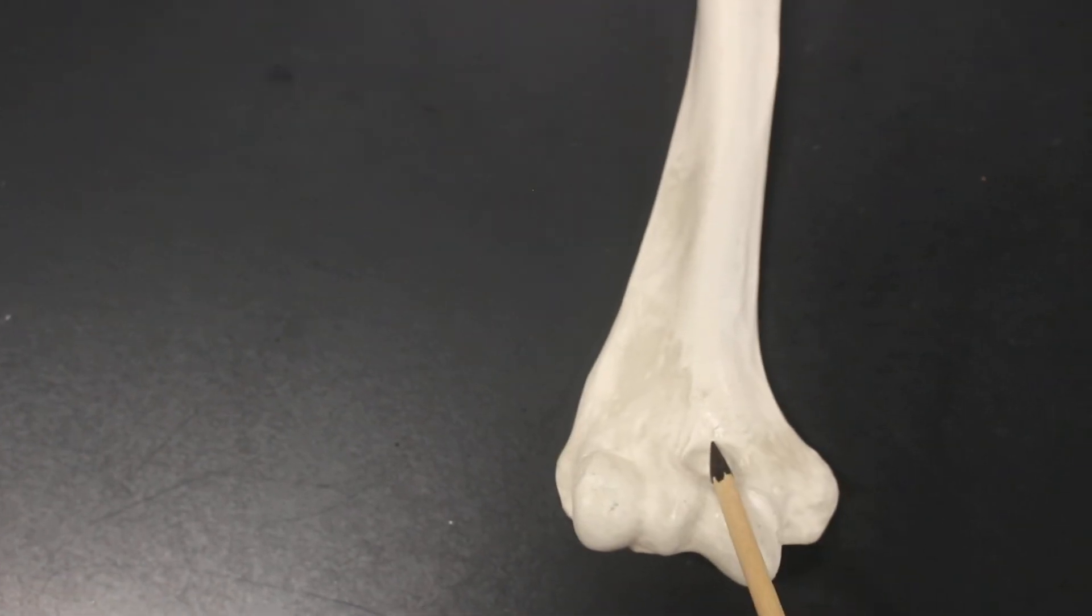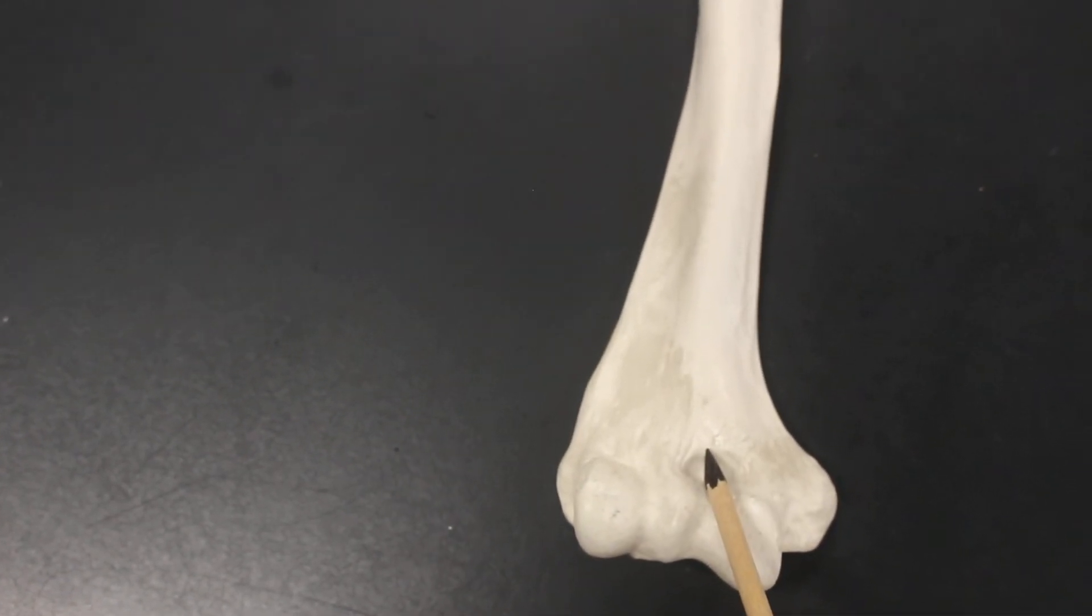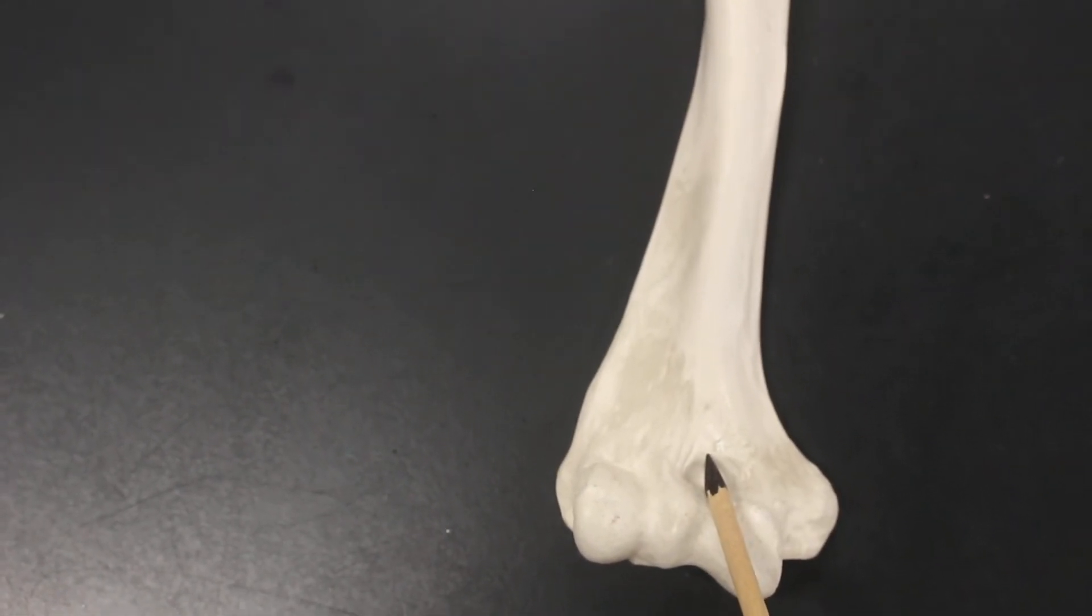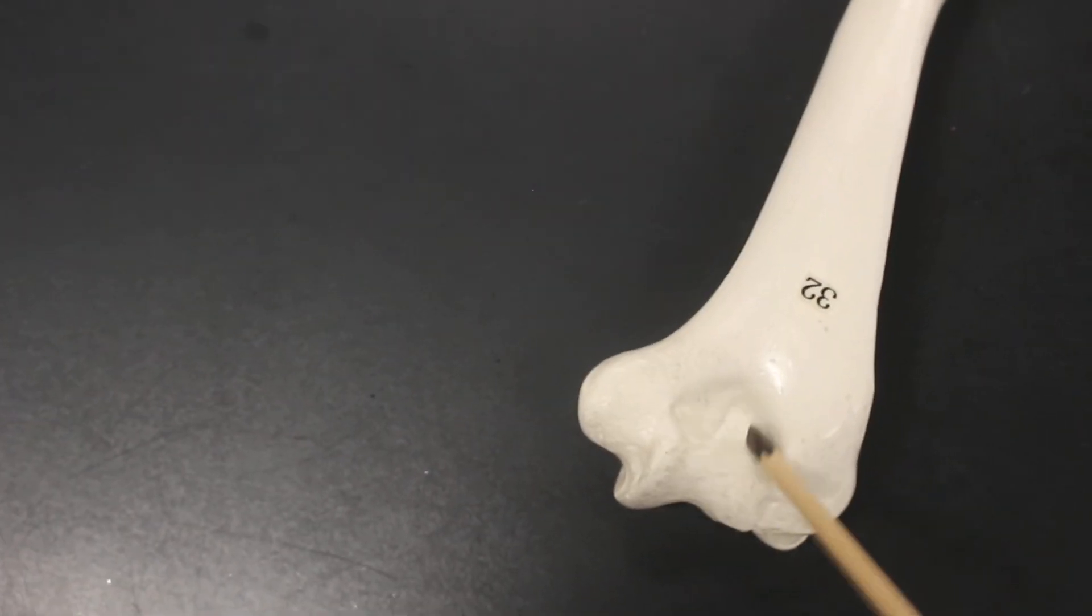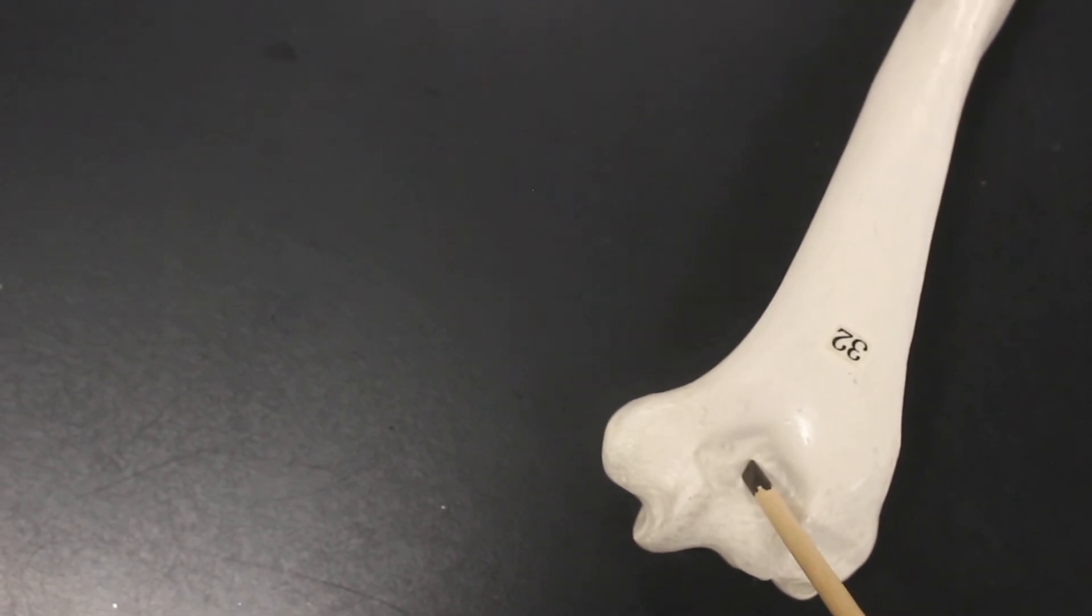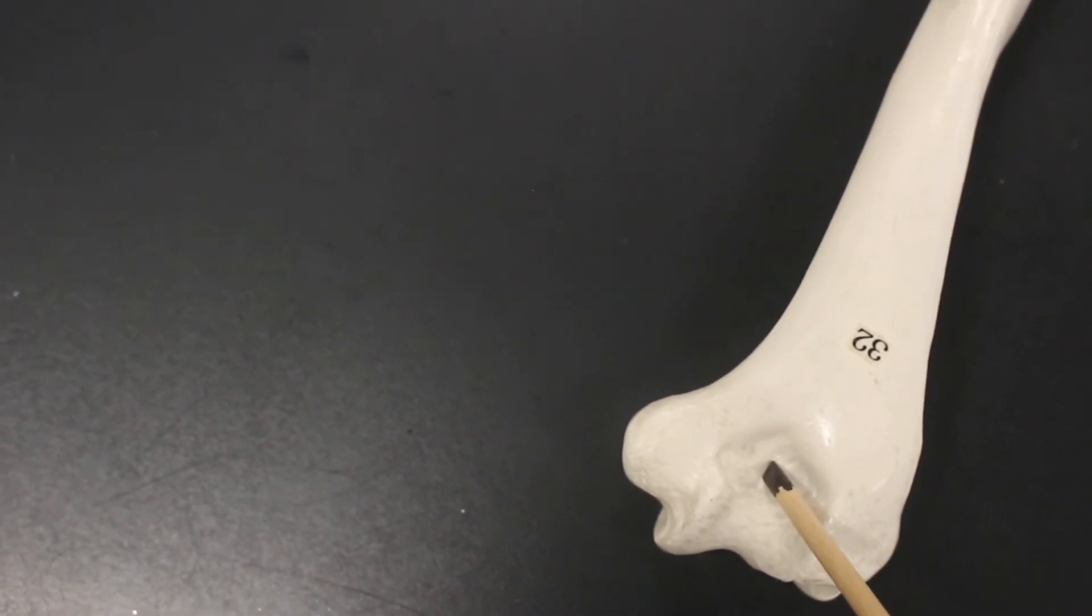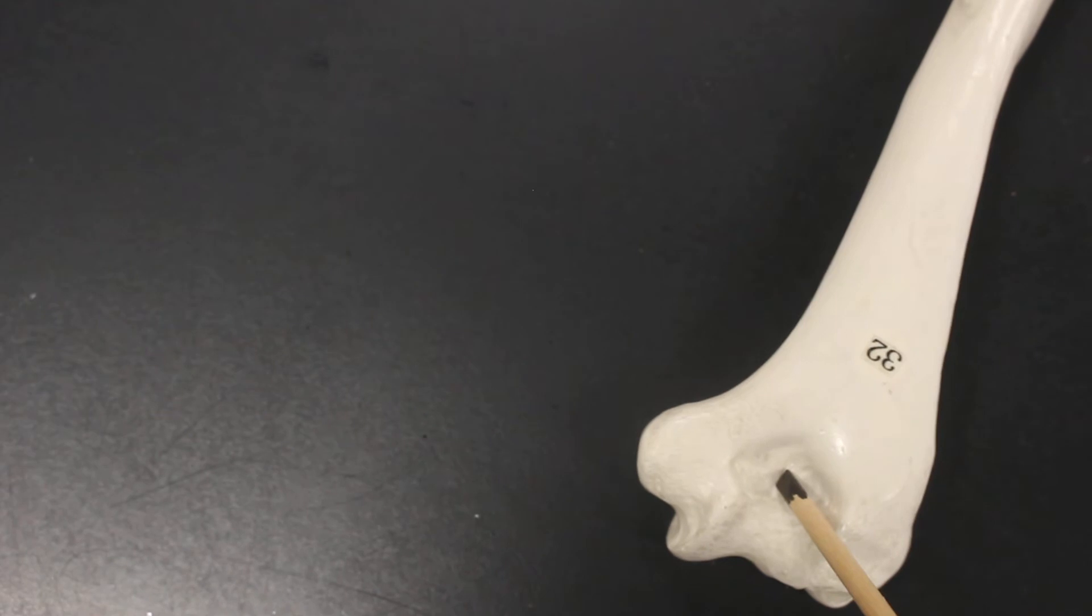Above the trochlea is the coronoid fossa. And then we can flip this around. We have this really big depression here. That is the olecranon fossa.